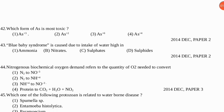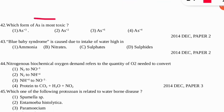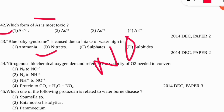Question 42: which form of arsenic is the most toxic? The correct option is number one — arsenic(III), i.e., As³⁺. Question 43: blue baby syndrome is caused due to intake of water high in which element? The correct option is B — nitrate (NO₃⁻). Don't confuse this with nitrite — it is specifically nitrate.